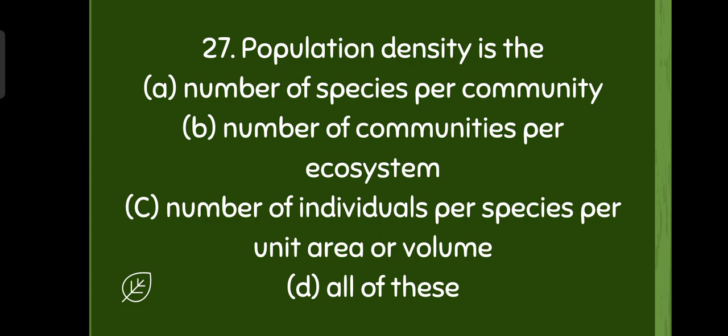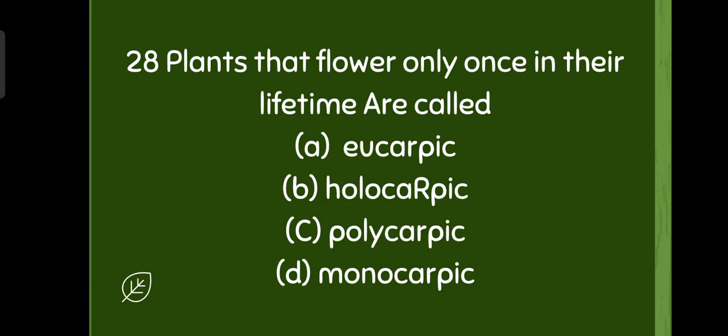Number of communities per ecosystem, number of individuals per species per unit area or volume, or all of these. So option D is the right one, all of these. They make the population density.